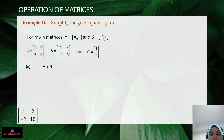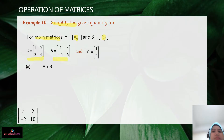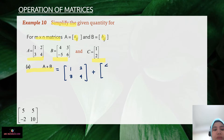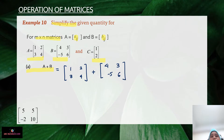Let's look at Example 10. We need to simplify the given quantities for matrices A, B, and C. For question (a), A plus B — let's do this together. We take matrix A and write down all its elements, then add matrix B with elements 3, negative 5, and 6.